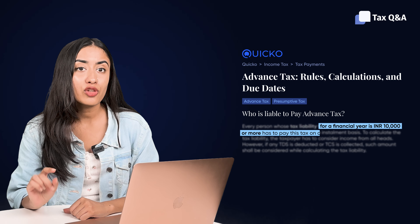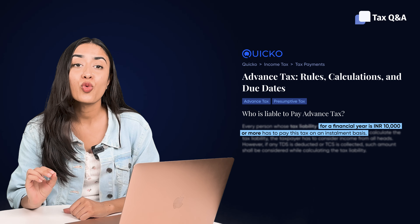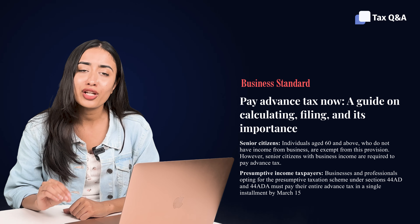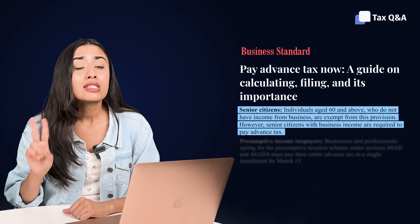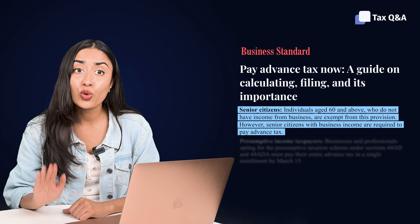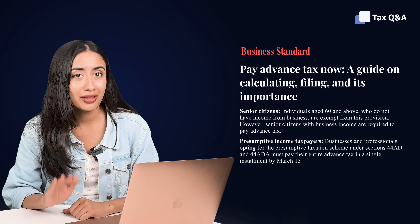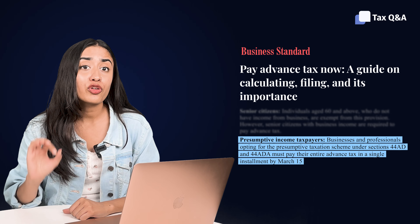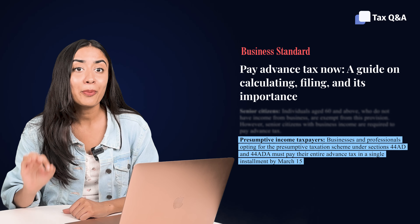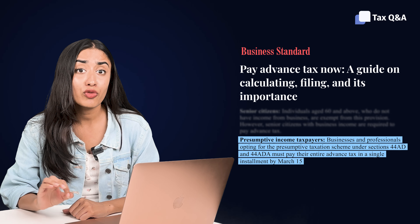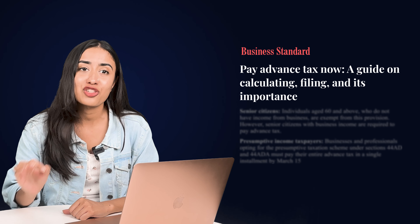You need to pay advance tax if your tax liability for the year is more than ₹10,000 — while calculating this, do consider any TDS that you've already paid. Second, senior citizens don't have to pay advance tax if they don't have any business or professional income. Third, those opting for the presumptive taxation scheme can pay the entire tax liability in a single installment before 15th March of the relevant financial year.